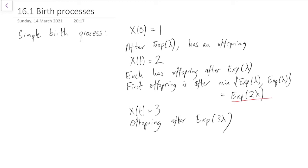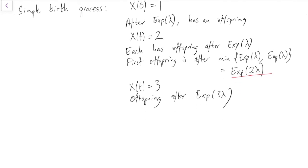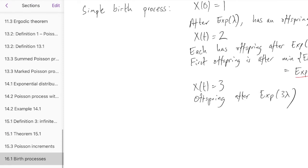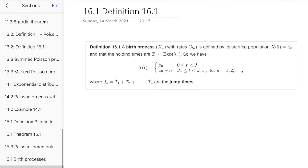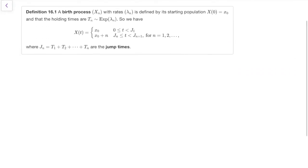So we have the holding times as exponential distributions but their rates are increasing. In the Poisson process it was exponential lambda, exponential lambda, exponential lambda. But for this simple birth process it's exponential lambda, exponential 2 lambda, exponential 3 lambda, exponential 4 lambda, and they become more and more as there are more individuals. So this simple birth process is the first example of a more wide-ranging definition.